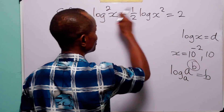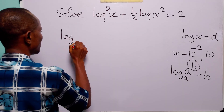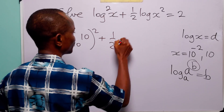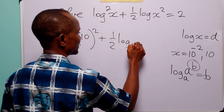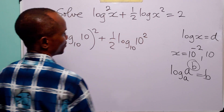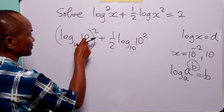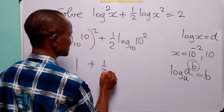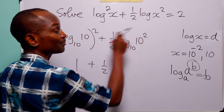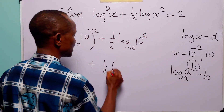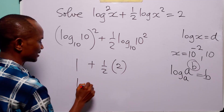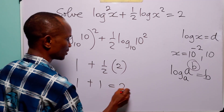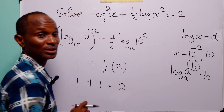For the second value of x, when we substitute 10 into the original equation we have log base 10 of 10, squared, plus a half times log base 10 of 10, squared. Log base 10 of 10 is equal to 1, and log base 10 of 10 to the power 2 is equal to 2. So this is 1 squared plus half of 2, which is 1 plus 1, equal to 2 — exactly what we have on the right-hand side.